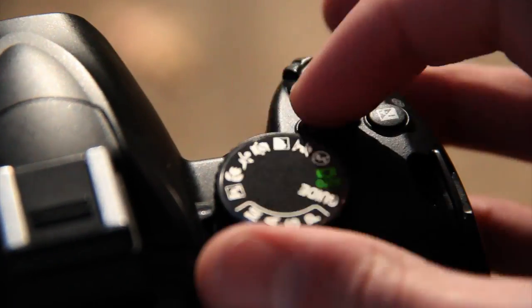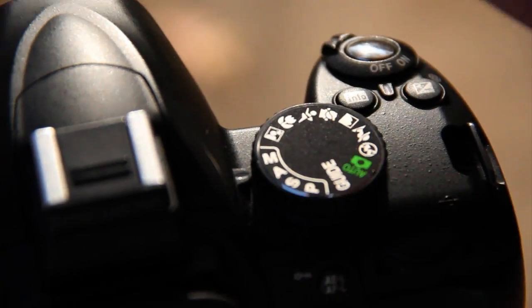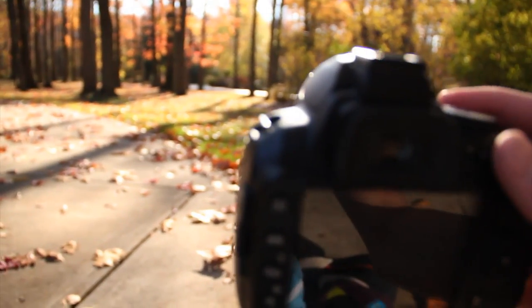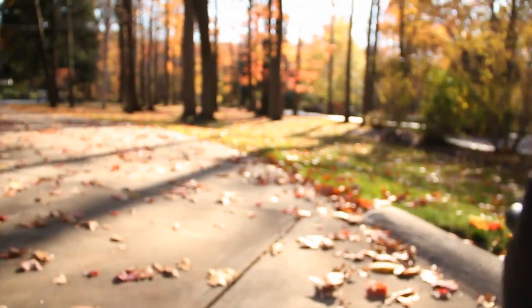First, you're going to want to turn it on manual mode. There we go. You want to have it on a high ISO and a low shutter speed. So I'm going to do that now.